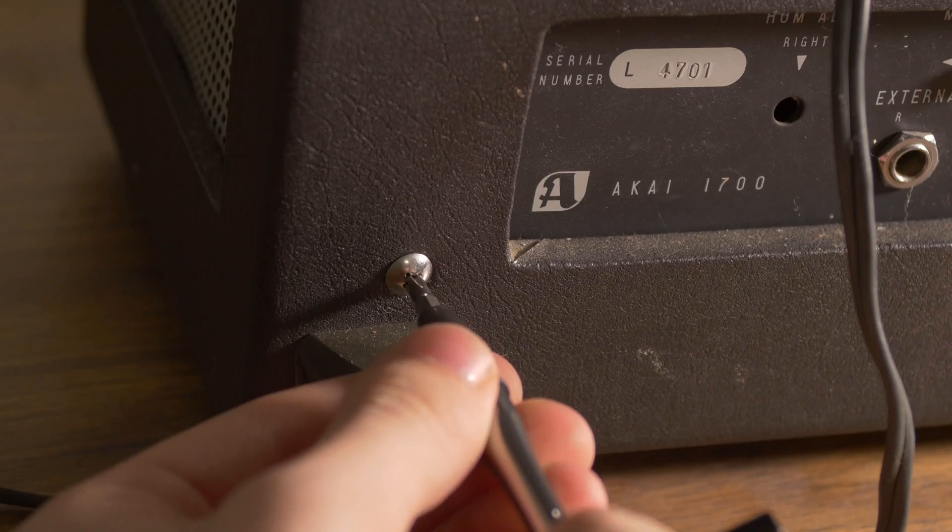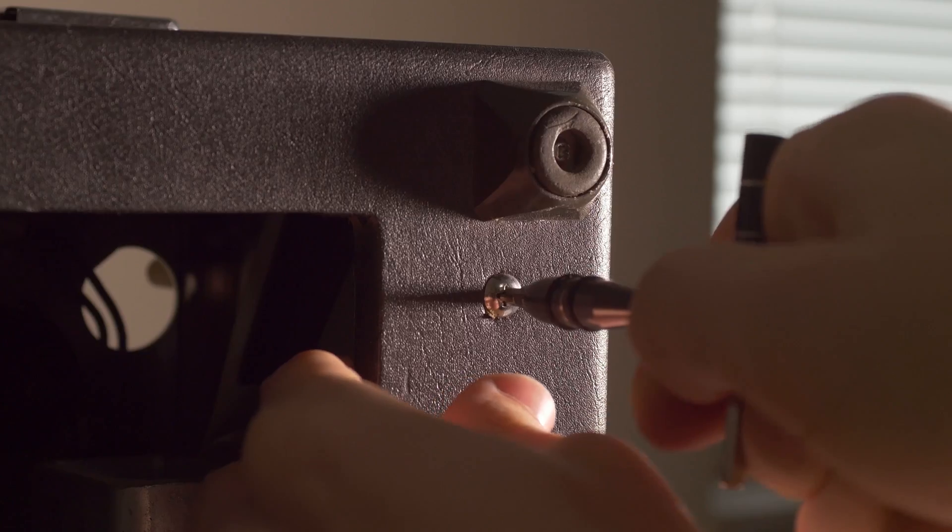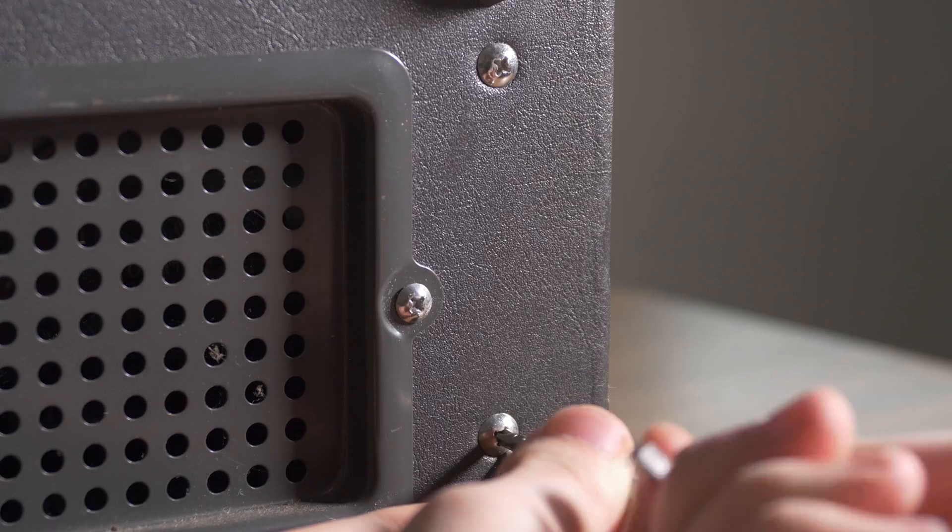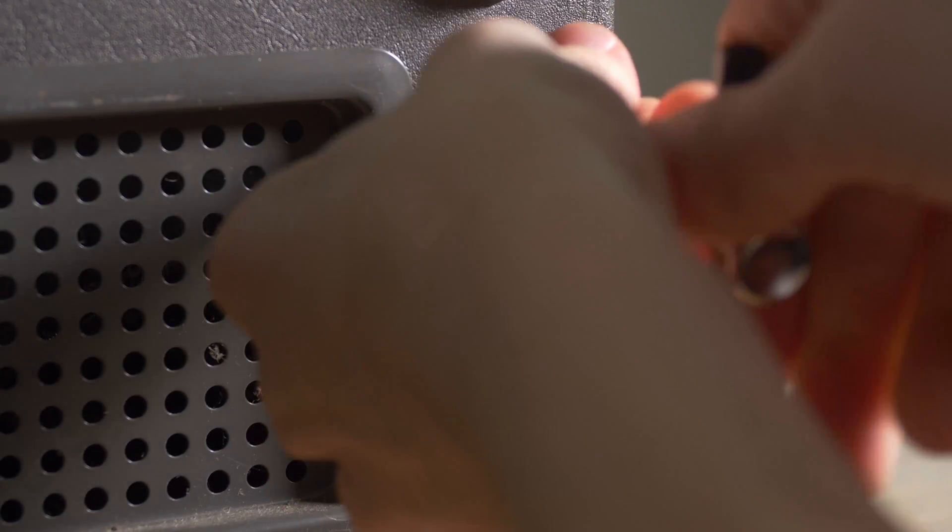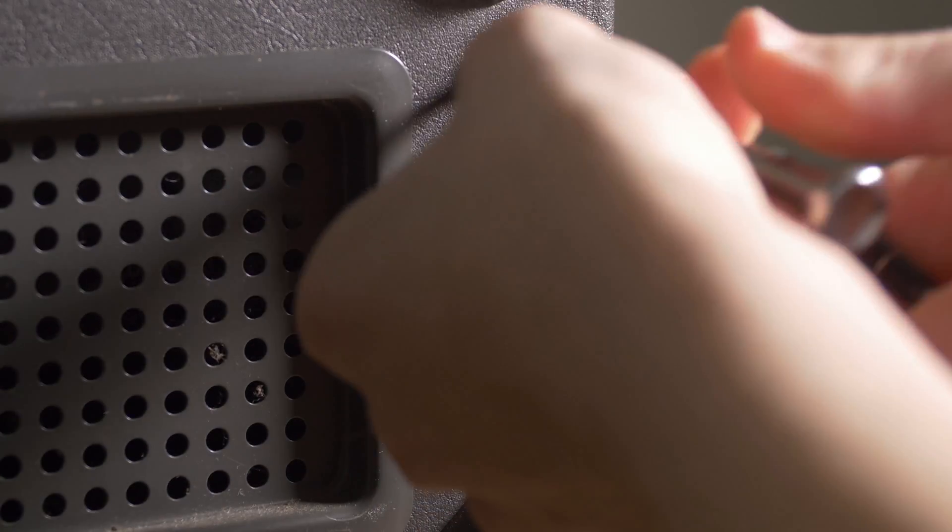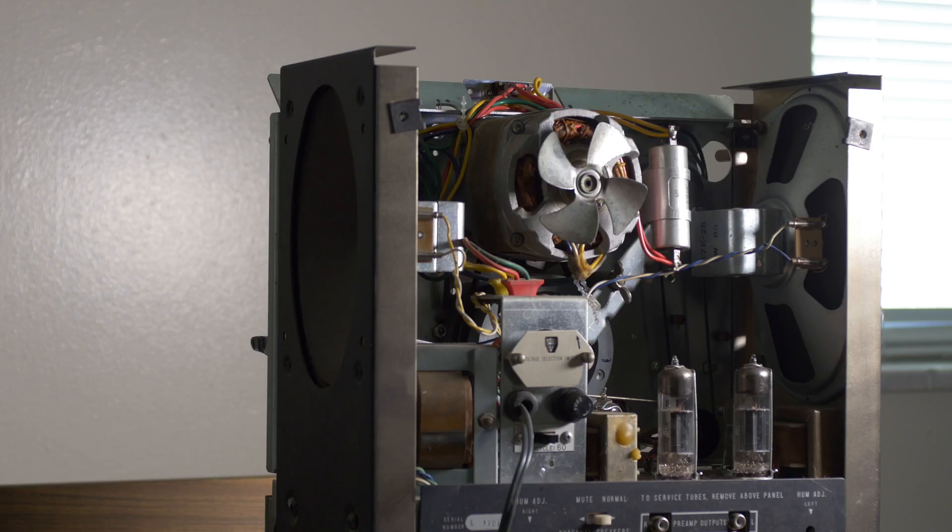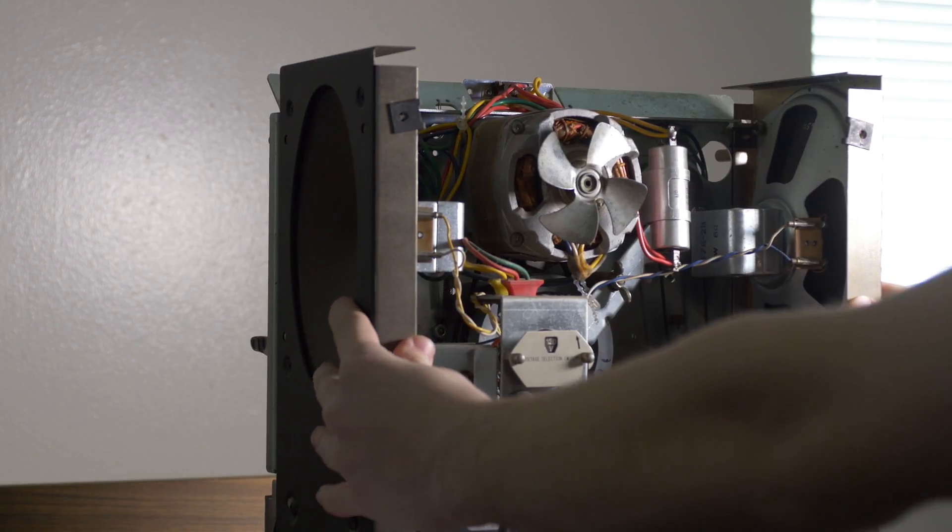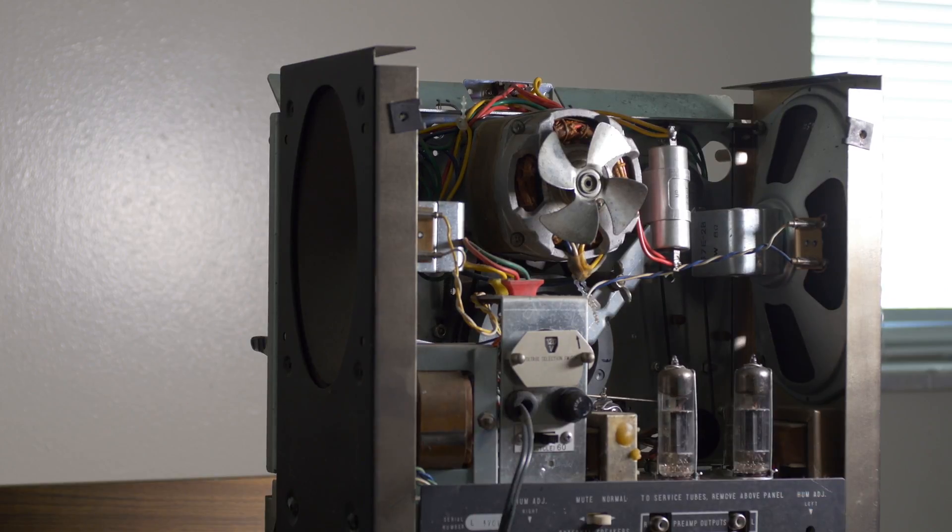Then to remove the frame from the outer case, you remove the four screws at the back of the case, and the four screws on the bottom of the case. Unfortunately, I wasn't able to film the act of lifting the frame from the case, as it required both hands and all of my attention. It's likely a task better done by two people.